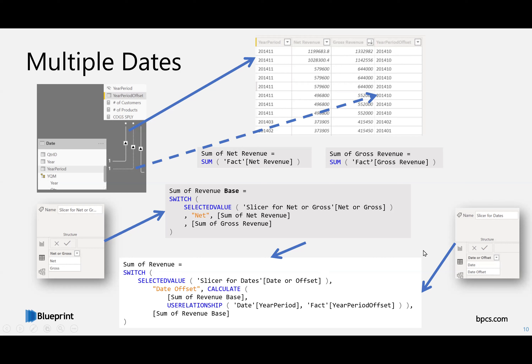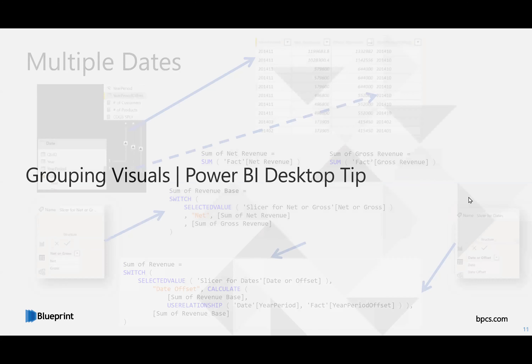I renamed the original measure to sum of revenue base, and sum of revenue — which many other measures already reference — now uses the date table switch. So both toggles can work together, and it will work with any measures dependent on sum of revenue. The SELECTEDVALUE approach is probably the easiest to explain. If you have lots of dependencies between measures, using Tabular Editor you can actually see those dependencies, which is really neat.